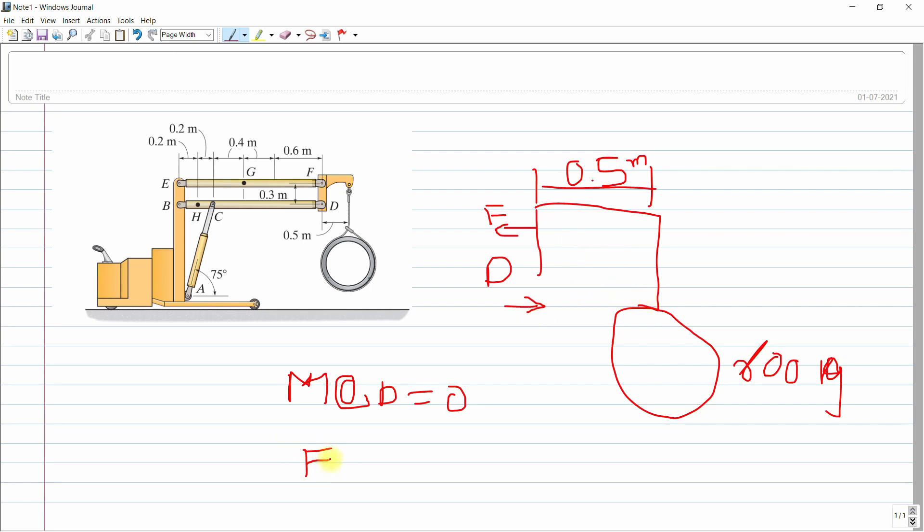So we will find out F multiply by this distance is around 0.3 meter, 0.3 equal to this 600 kg multiply by 9.81, it will give in Newton, and this multiply by distance 0.5.